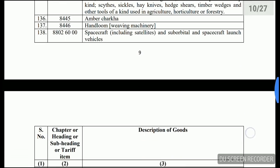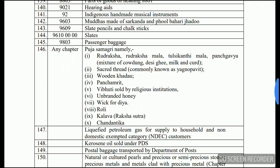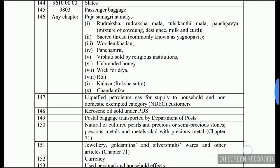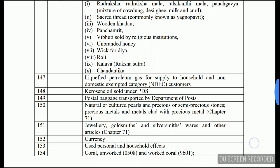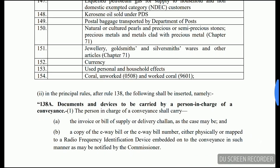Also exempt are earthen pots, glass bangles, agricultural implements, amber, charkha, handloom, spacecraft and parts of goods of heading 8801, hearing aids, indigenous handmade musical instruments, slate, pencil and chalk, passenger baggage, puja samagri, liquefied petroleum gas for supply to household and non-domestic exempted category customers, kerosene oil, postal baggage, natural or cultured pearls and precious or semi-precious stones, jewelry, goldsmiths and silversmiths wares, currency, used personal and household effects, and unworked and worked coral. This was the whole list of 154 items.